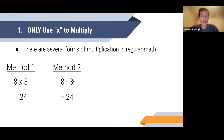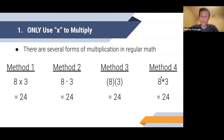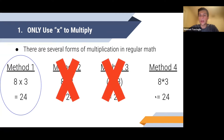Another method you can use is 8·3 — the dot in mathematics is used to represent multiplication. In regular math, we can also use parentheses to represent multiplication. If there are two sets of parentheses or even one set around a number, that may signify multiplication. A star also signifies multiplication in some situations, like eight star three equals 24. All of these are appropriate in regular math, but in equations only method one — eight times three using the × symbol — is allowed when writing solutions.